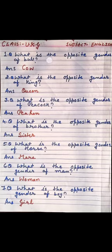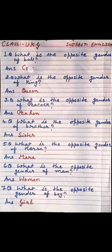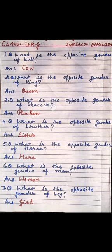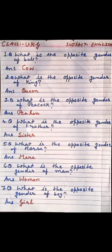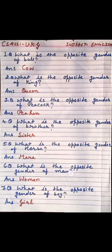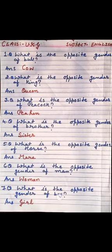First question. What is the opposite gender of bull? Answer: Cow. What is the opposite gender of king? Answer: Queen. What is the opposite gender of peacock? Answer: Peahen. What is the opposite gender of brother? Answer: Sister. What is the opposite gender of horse? Answer: Mare. What is the opposite gender of man? Answer: Woman. What is the opposite gender of boy? Answer: Girl.